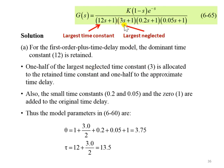This is the largest neglected, will be divided into 2. So one half of the largest neglected time constant which is 3 is allocated to the retained time constant or the largest constant here, and the other half is used to approximate the time delay.